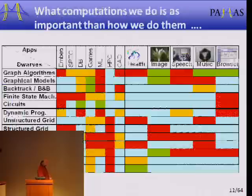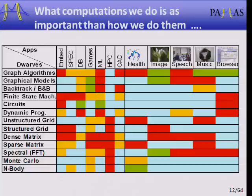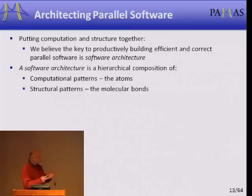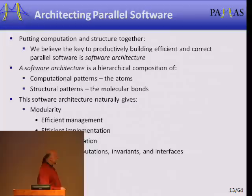Implicit in moving from a building to a factory notion is the observation that what computations we do are just as important as how we do them. In architecting parallel software, it's about putting both the computation and the structure together. The structure is the building, and the computation is the machinery in the factory. We believe the key to productively building efficient and correct parallel software is software architecture — a hierarchical composition of computational patterns, which are the core atoms of computation, and structural patterns, which are the molecular bonds holding them together.